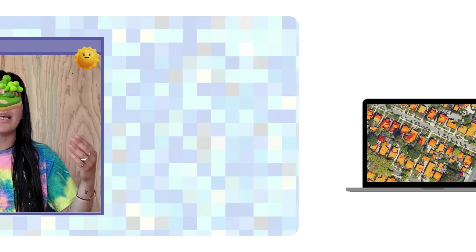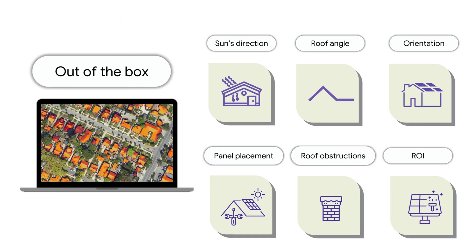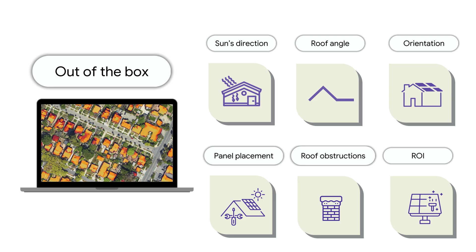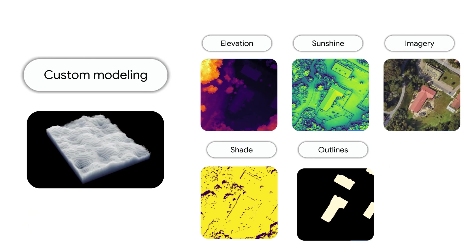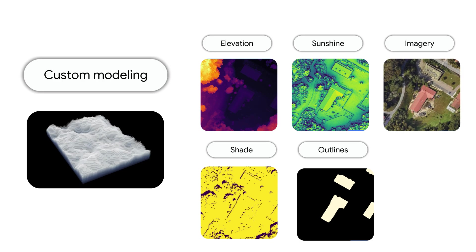The Solar API enables the sharing of solar data to any app you connect via code, and it currently offers out-of-the-box roof and solar estimations, as well as granular imagery for those who want to build their own custom roof or solar models.